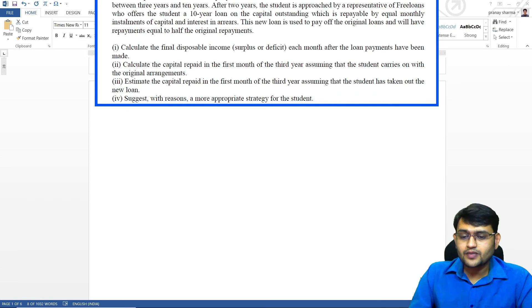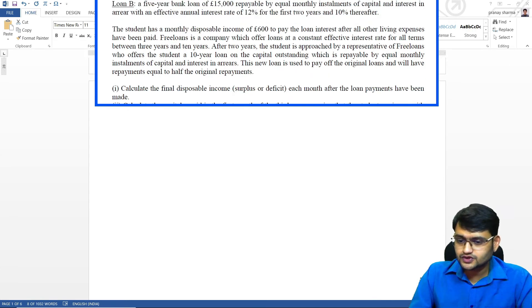For the third part we will have to read the rest of the question. So they say Free Loans is a company which offers loan at a constant effective interest rate for all terms between three years and ten years. After two years the student is approached by a representative of Free Loans who offers the student a 10-year loan on capital outstanding which is repayable by equal monthly installments of capital and interest in arrears. This new loan is used to repay the original loans and will have repayment equal to half the original repayments. This is important.